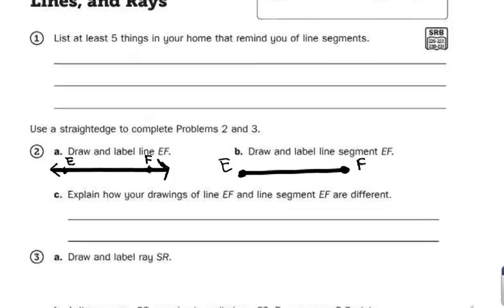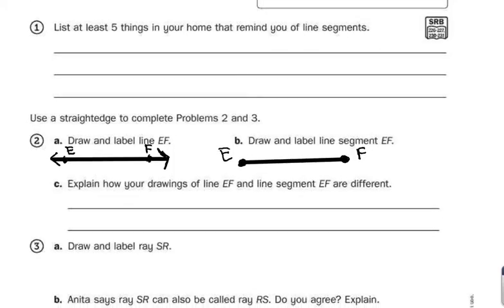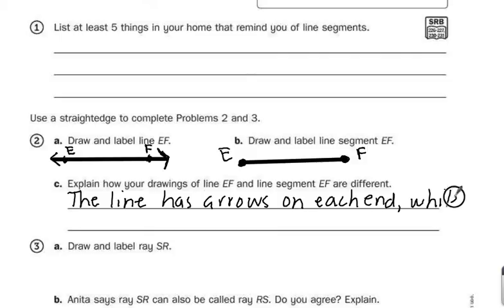So explain how your drawing of line EF and line segment EF are different. Just looking at those two, the line has arrows on both ends, and the line segment does not. Those arrows, remember, they tell us that a line goes on forever in both directions. The line segment tells us there's an endpoint and a beginning point, and it can be measured. So how are they different? The line has arrows on each end, while the line segment has endpoints.